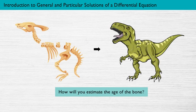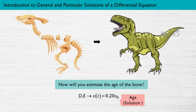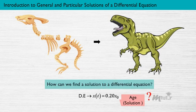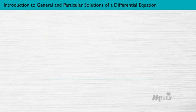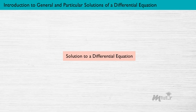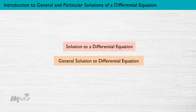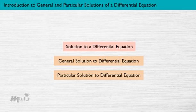By using the information given, you can derive a differential equation of the situation. On solving the equation, we can find the age of the bone. The solution of a differential equation can be classified into two types: the general solution and the particular solution.